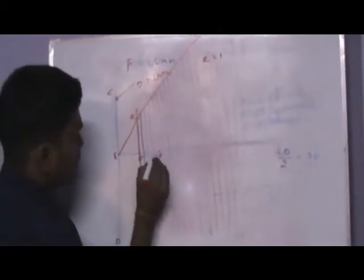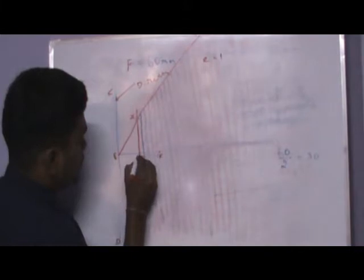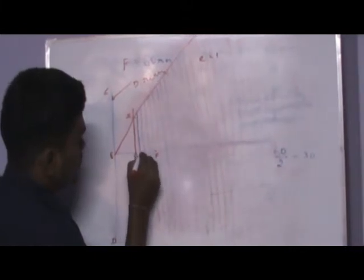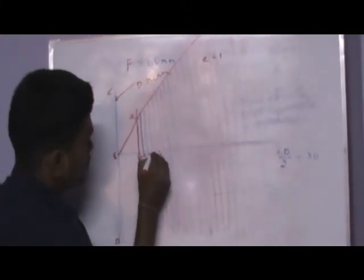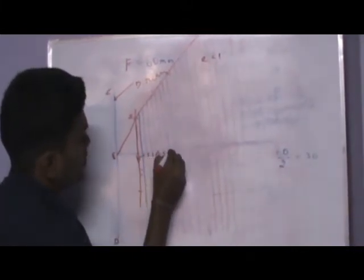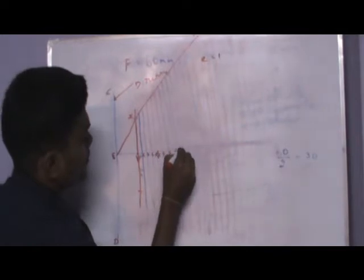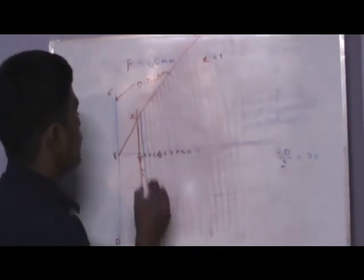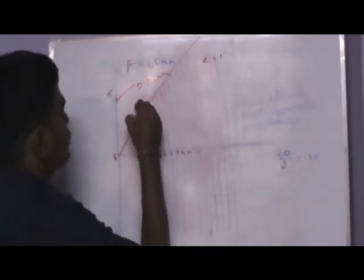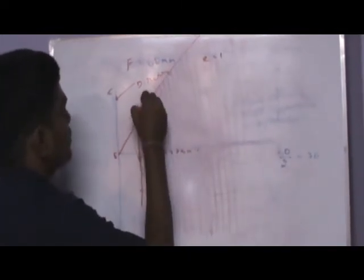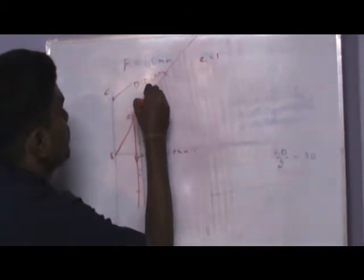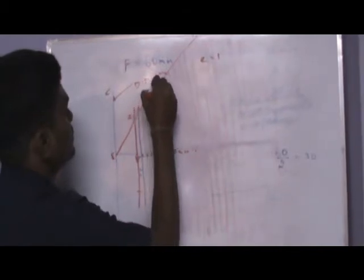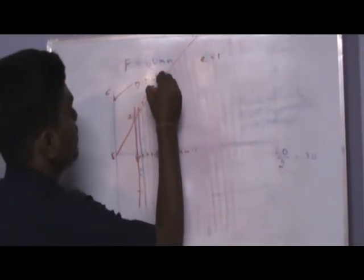Give names to the parallel lines. Name them 1, 2, 3, 4, 5, 6, etc. on one side, and 1-dash, 2-dash, 3-dash, 4-dash, 5-dash, etc. on the other side.